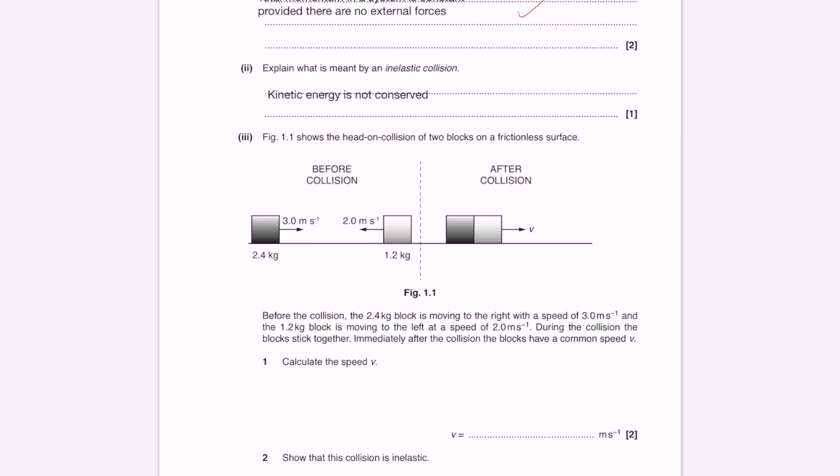Part three, figure 1.1 shows a head-on collision of two blocks on a frictionless surface. Before the collision, the 2.4 kg block is moving to the right with a speed of 3 meters per second, and the 1.2 kg block is moving to the left at a speed of 2 meters per second. During the collision, the blocks stick together. Immediately after the collision, the blocks have a common speed V. Calculate the speed.